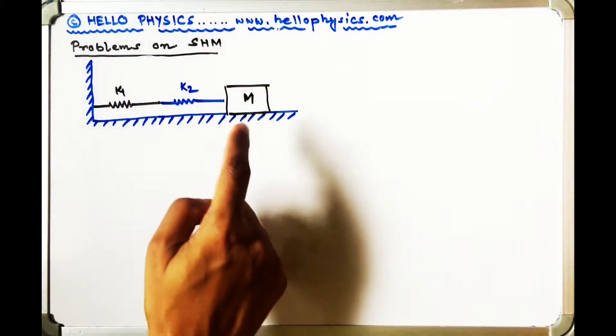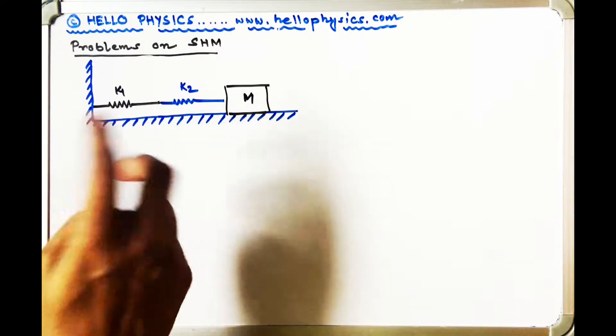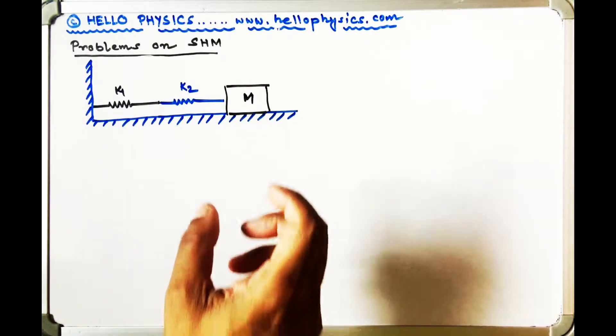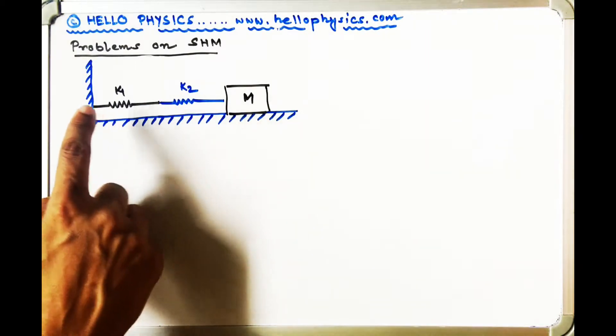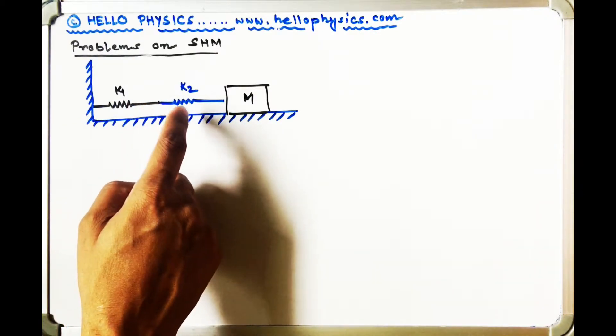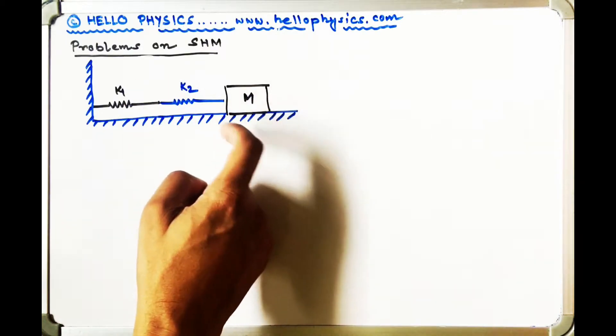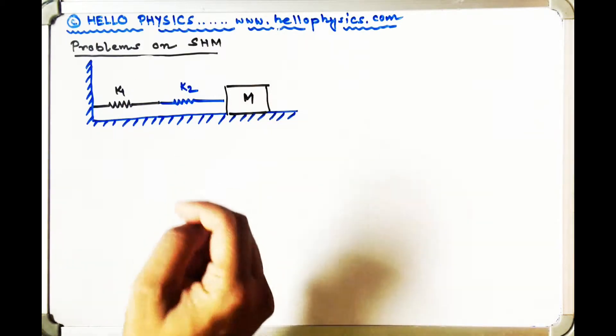In this problem I have an object connected to two springs once again but the configuration of the springs is a little different. Here the end point of the first spring is connected to the starting point of the second spring and the end point of the second spring is connected to an object of mass capital M.